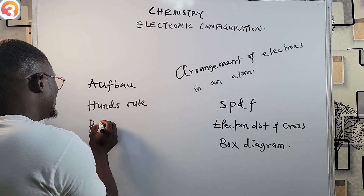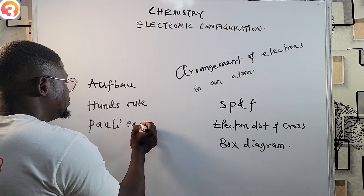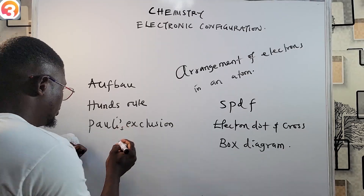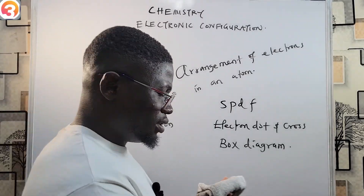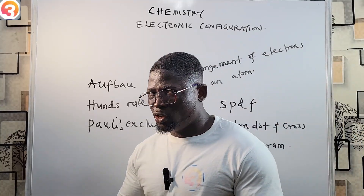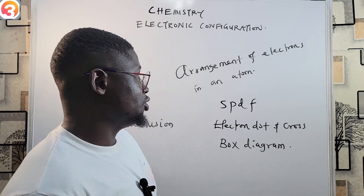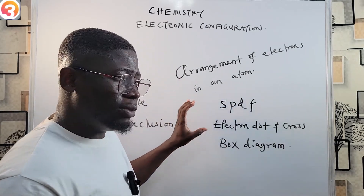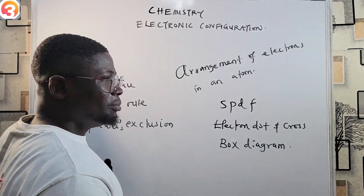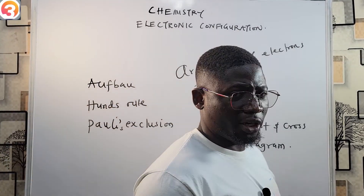And thirdly we have the Pauli exclusion principle. So these are the rules that govern the writing of electronic configuration. Your job is to make sure you know electronic configuration, the methods for writing it, and the principles that govern it.